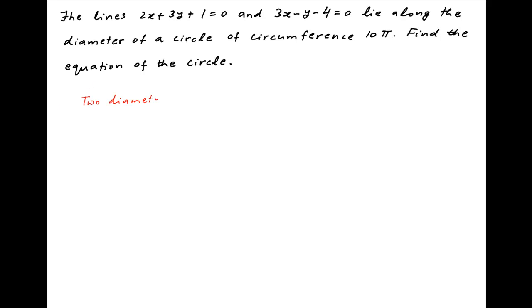We know that two diameters of a circle intersect at the center of the circle. We are given two equations representing the diameters of the circle. The first equation is 2x plus 3y plus 1 equals 0 and the second equation is 3x minus y minus 4 equals 0.